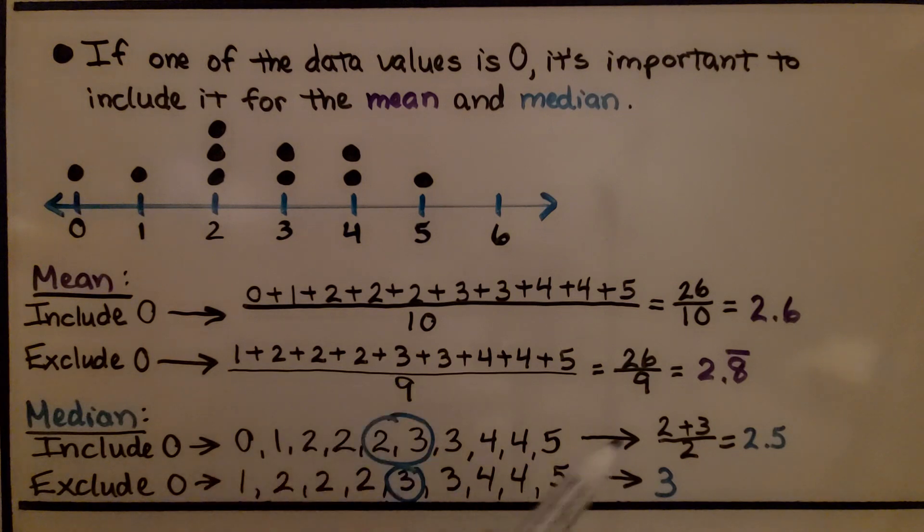That's going to give us a mean of 2.8, approximately, because this eight continues. Remember, when you see a bar over it, that means the eight is going to continue on.